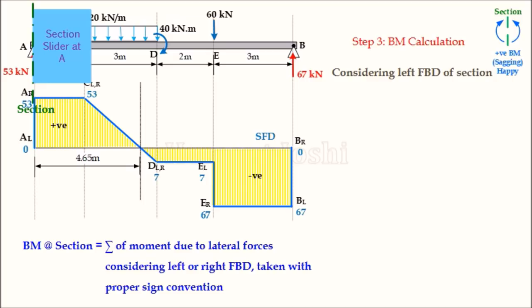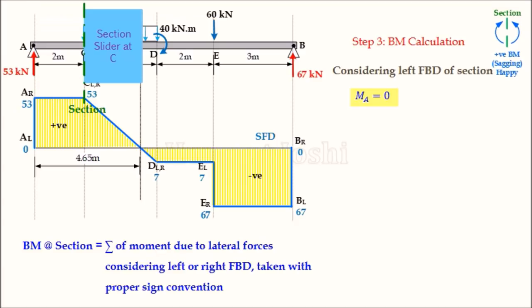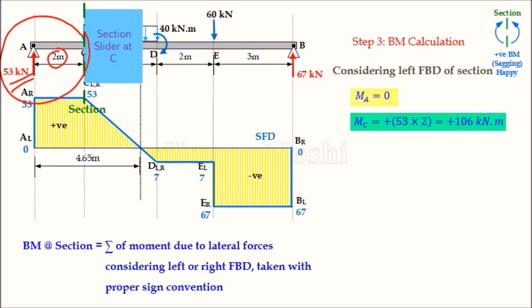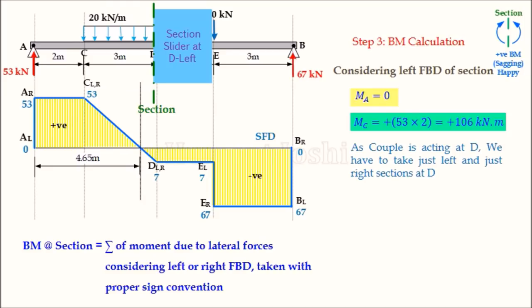At point A, the left side is empty, so M(A) = 0. At point C, considering the left FBD: force 53 kN at distance 2 m, creating an 'out' (sagging) moment, so M(C) = 53 × 2 = +106 kN·m. At point D, we need two sections. Since D is where a couple acts, we compute M(D,left) and M(D,right) separately.